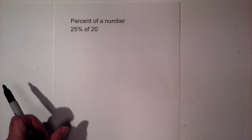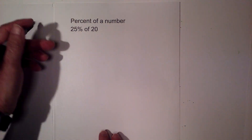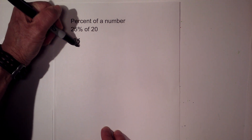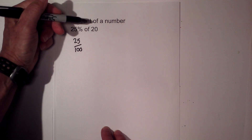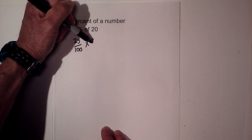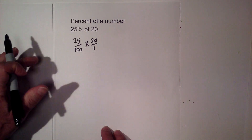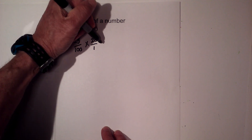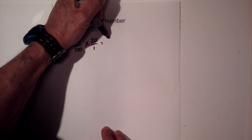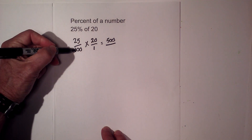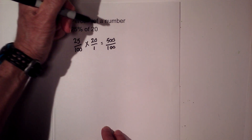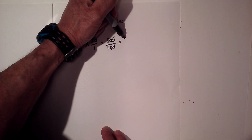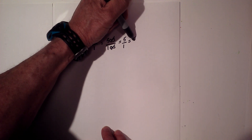Our first problem is 25% of 20. First, let's use the fraction form. Convert 25% to 25 over 100, think of 'of' as multiplication, and rewrite 20 as 20 over 1. Multiply straight across: 25 times 20 is 500, and 100 times 1 is 100. We can reduce 500 over 100 by canceling zeros, giving us 5 over 1, which equals 5.